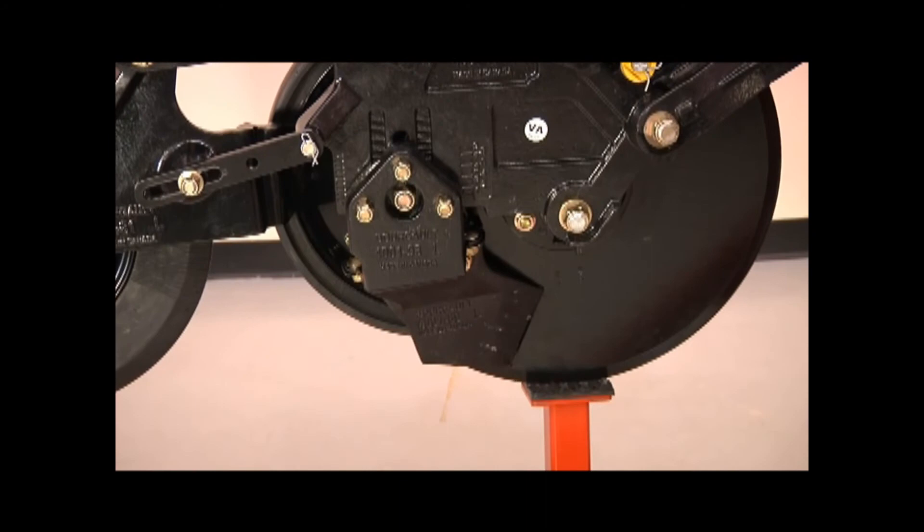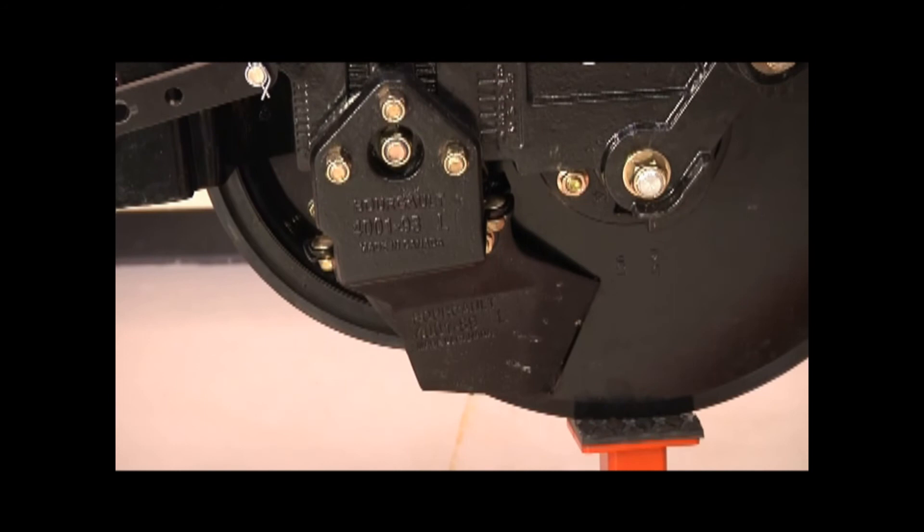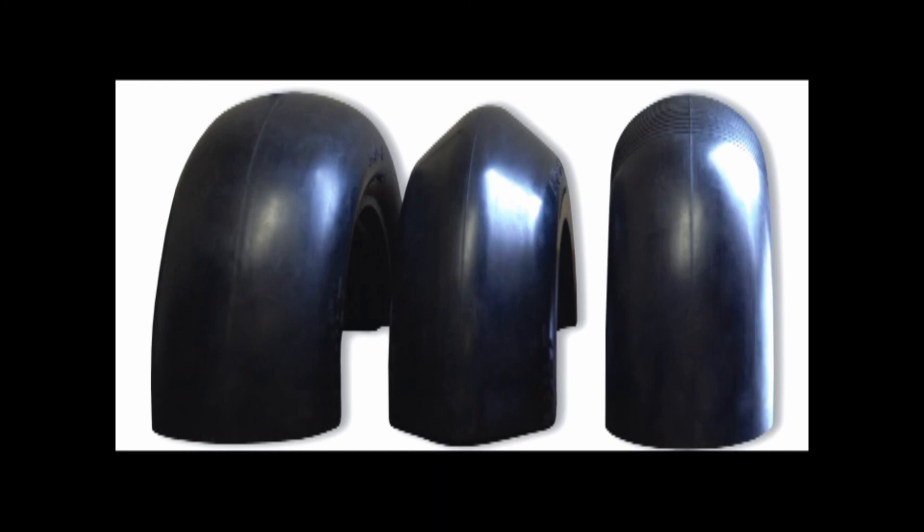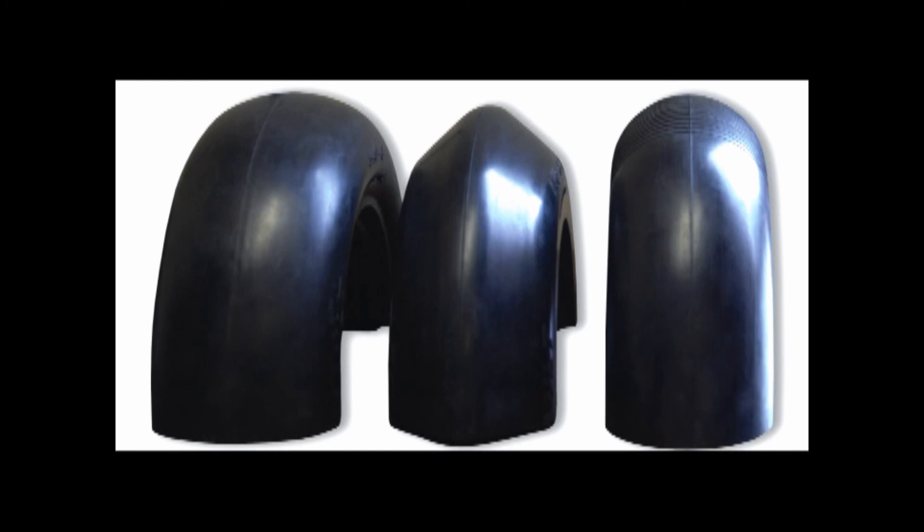The low disturbance scraper is ideal if you farm in typically dry conditions and field residue is not a common concern. Soil moisture is retained with a zero-till-like field finish. The scraper also has a narrow profile, so less horsepower is required in drier conditions. The low disturbance scraper is typically paired with the round pneumatic or semi-pneumatic packer wheel.